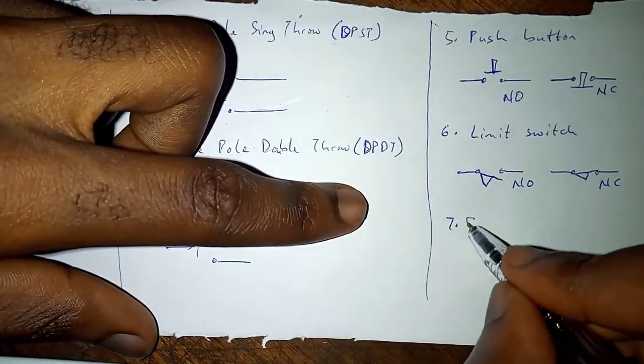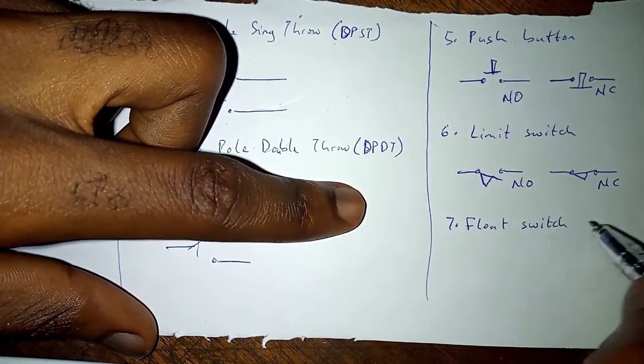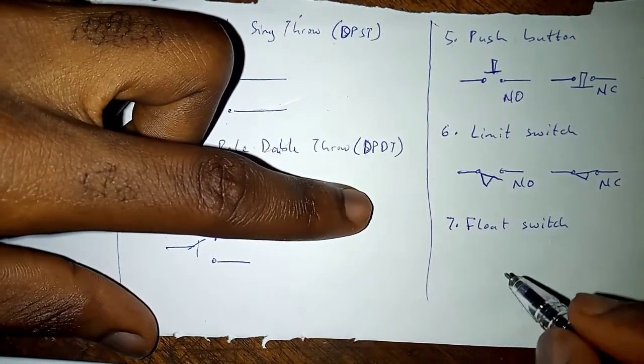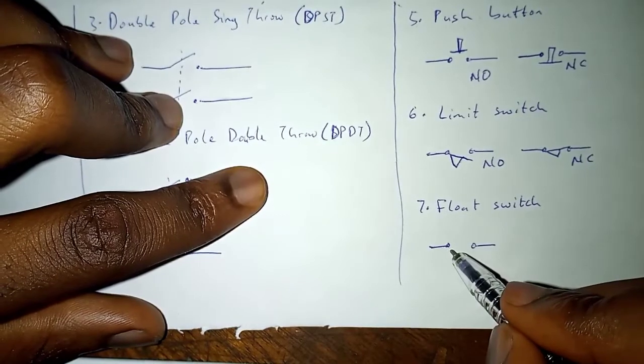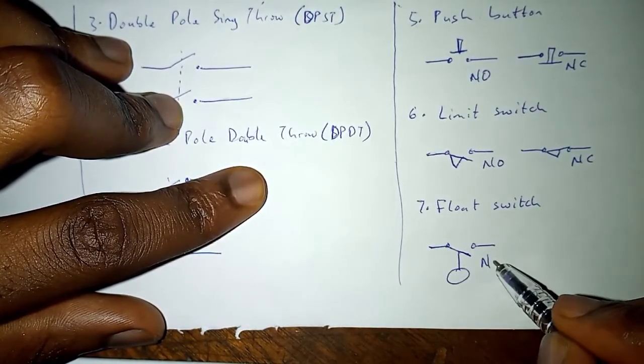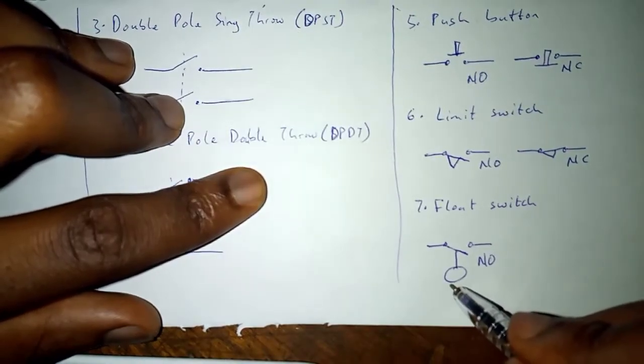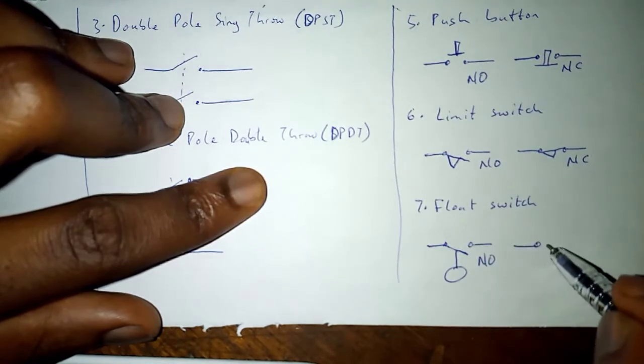So we have a float switch. You might wonder how you can tell when your tank is full when you're pumping water or not. So a float switch is used. We have the normally open type. When float comes around, it pushes this up to close. We have the normally closed type.